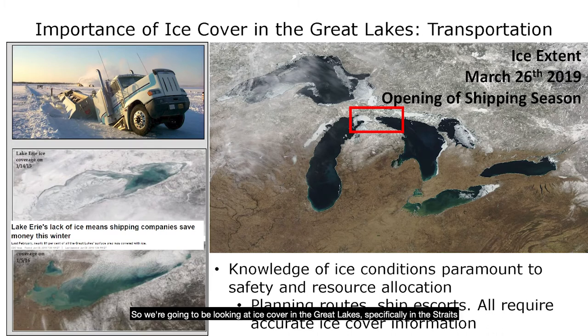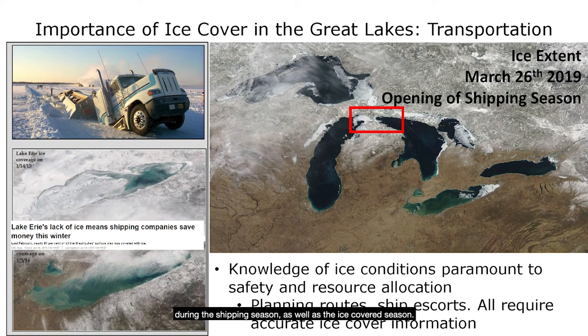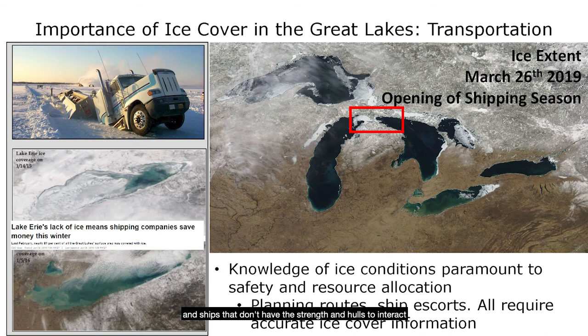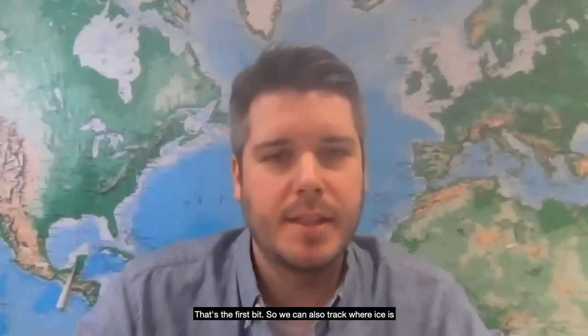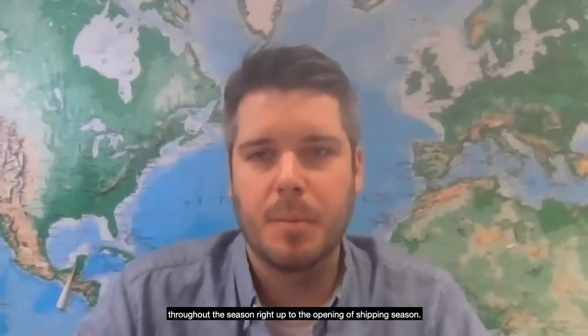We're going to be looking at ice cover in the Great Lakes, specifically in the Straits of Mackinac. Knowledge of ice conditions is paramount to the safety and resource allocation of ships and Coast Guard cutting vessels during the shipping season as well as the ice-covered season. They have to plan routes, plan ship escorts, and all require accurate ice cover information — we don't want ships moored in ice for long periods without the hull strength to interact with ice cover. We can also track where ice is throughout the season, right up to the opening of shipping season.